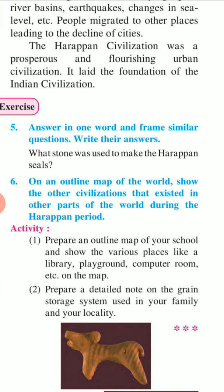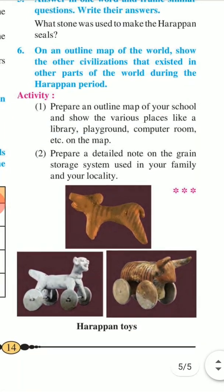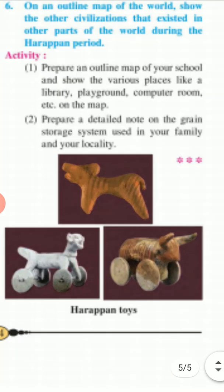Sixth: On an outline map of the world, show the other civilizations that existed in other parts of the world during the Harappan period. Activity: These are two exciting activities you should do. Prepare an outline map of your school and show the various places like the library, playground, computer room, etc. on the map. Prepare a detailed note on the grain storage system used in your family and your locality.